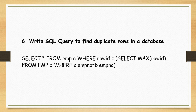To find duplicate rows, the query looks like this: SELECT * FROM emp a WHERE rowid = (SELECT MAX(rowid) FROM emp b WHERE a.emp_number = b.emp_number). Here emp_number means employee number.